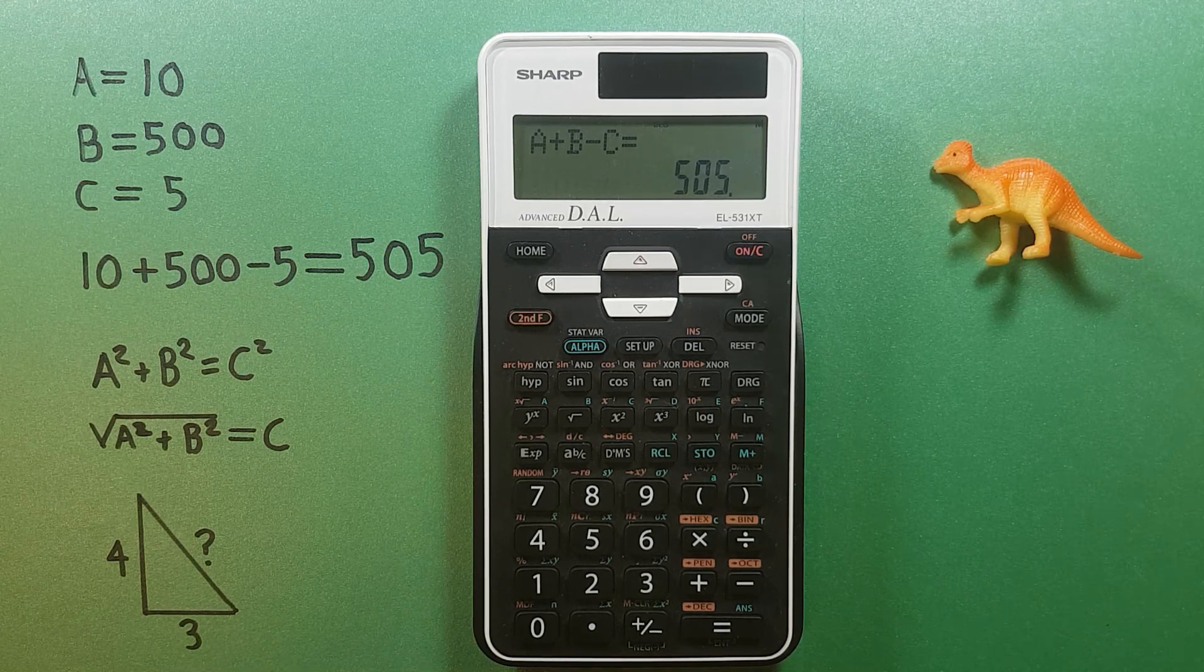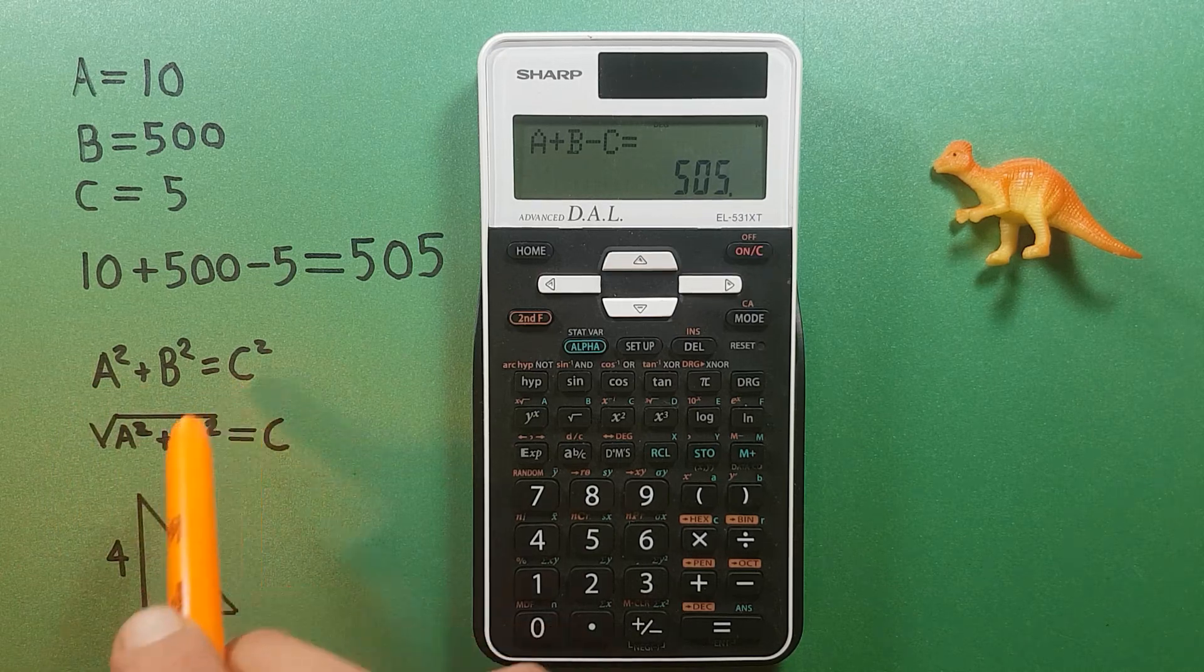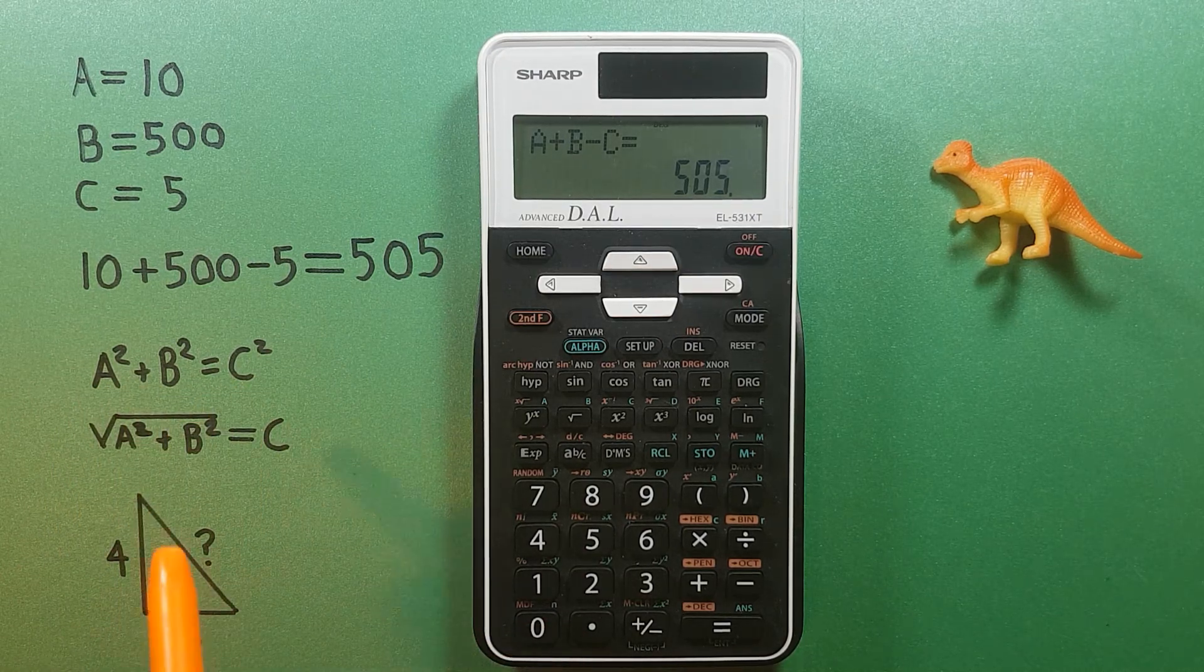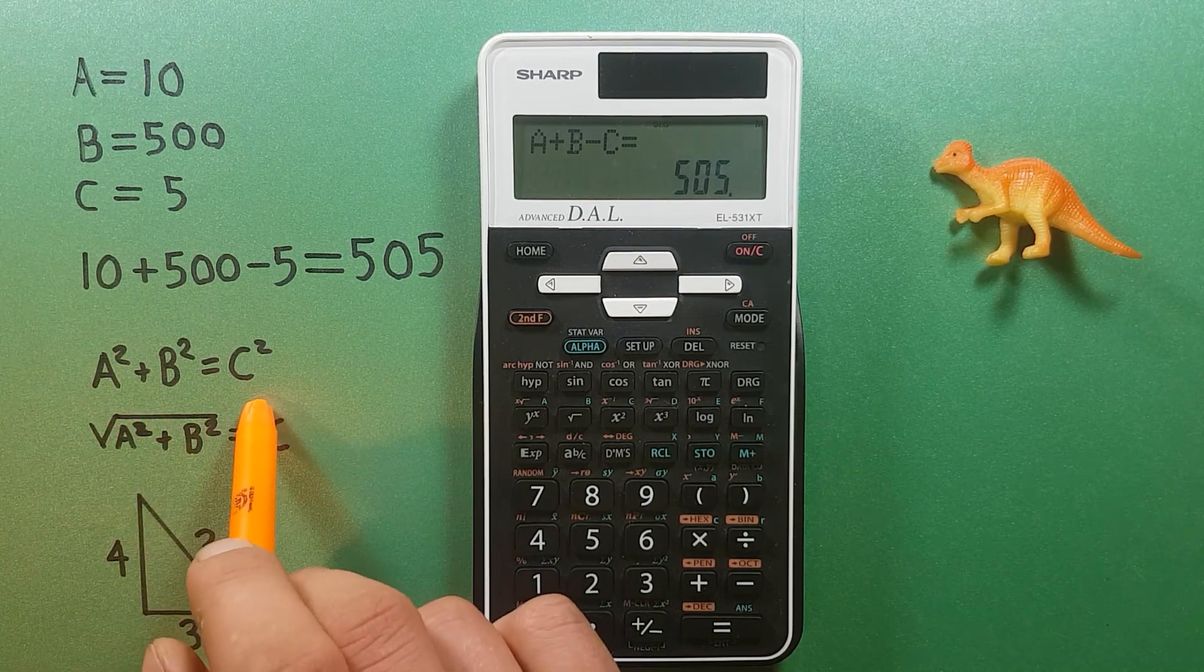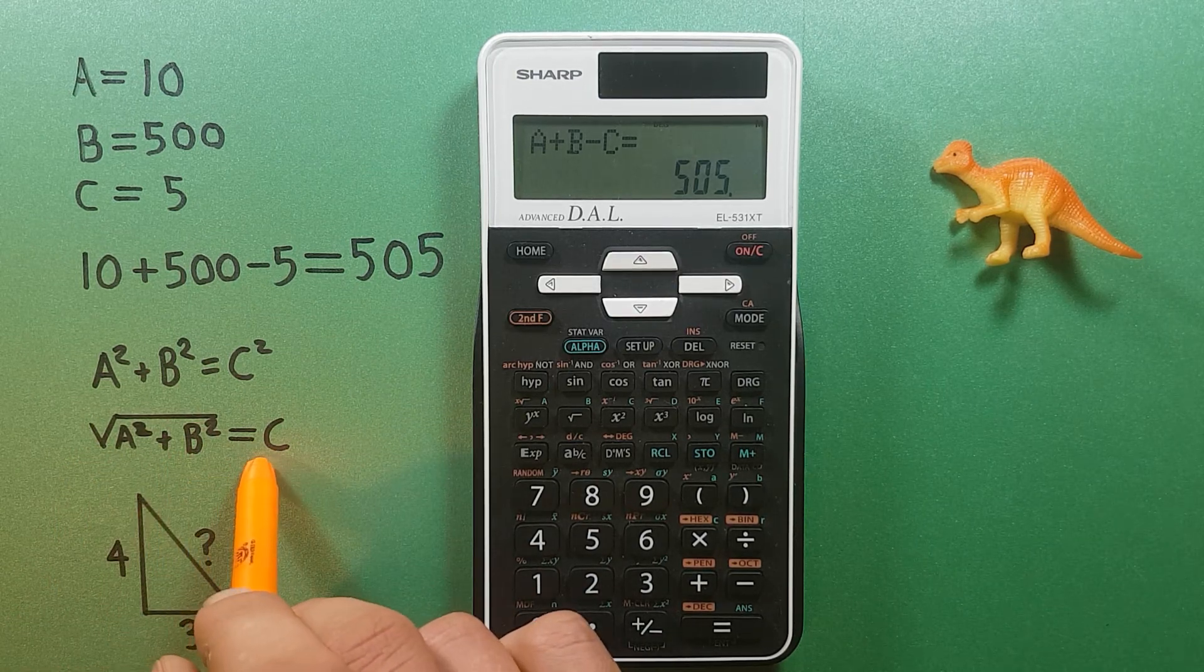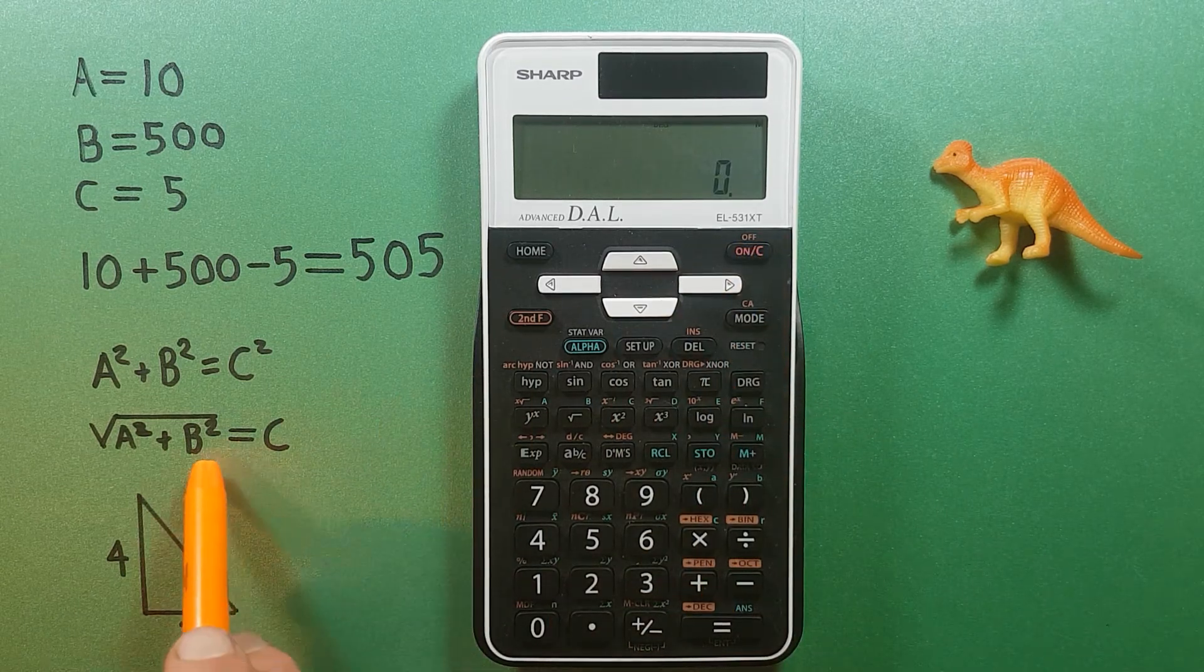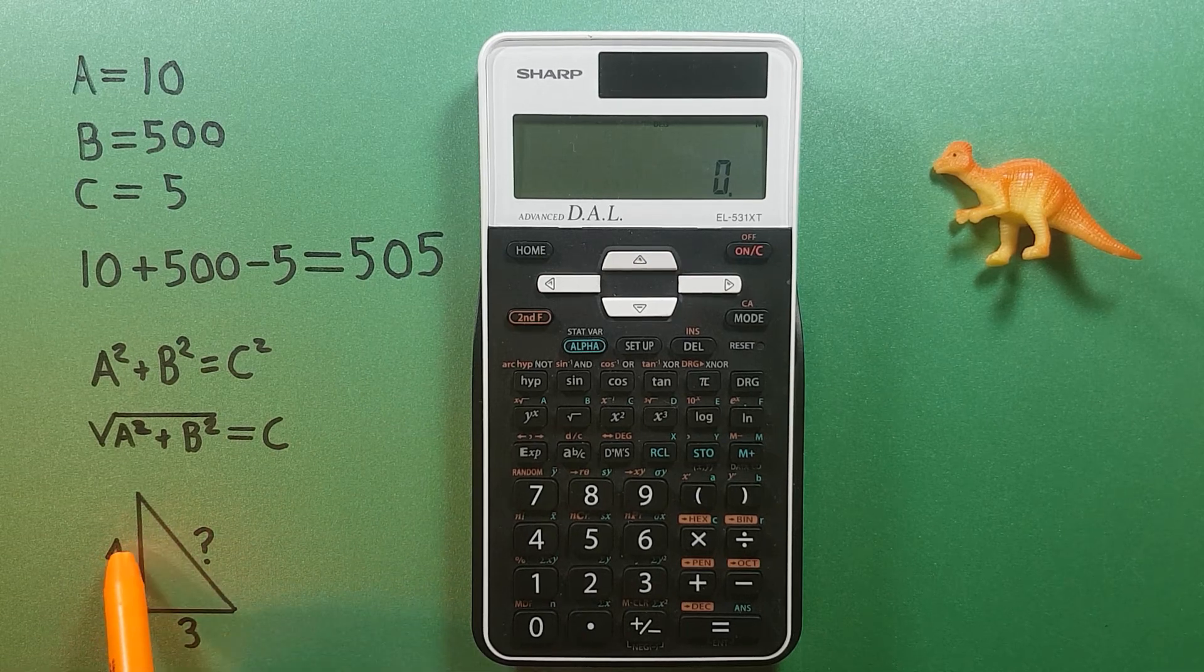Say Pythagoras theorem for finding out the length of a side of a right angle triangle. This equation is A squared plus B squared equals C squared, which can be rewritten as square root of A squared plus B squared equals C. Let's say we have this triangle here with our four length side and our three length side.